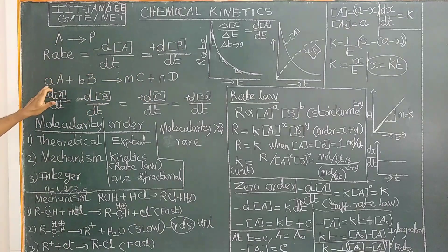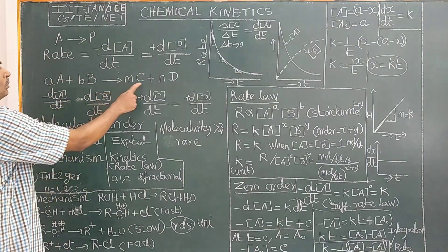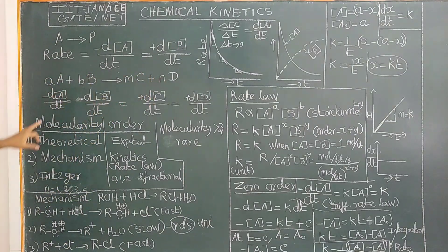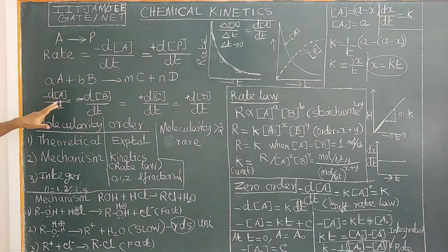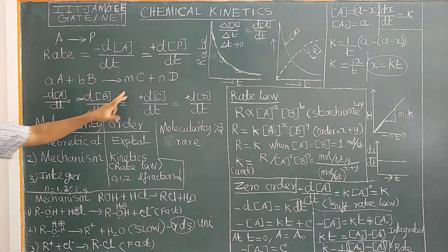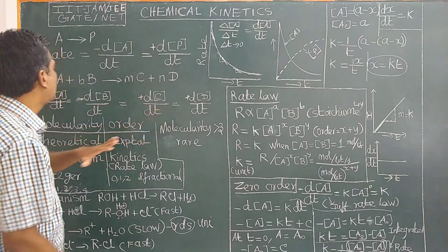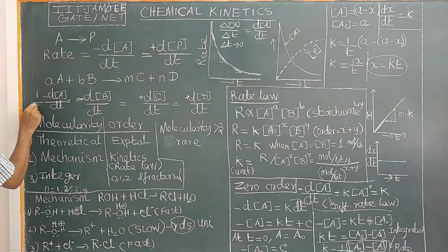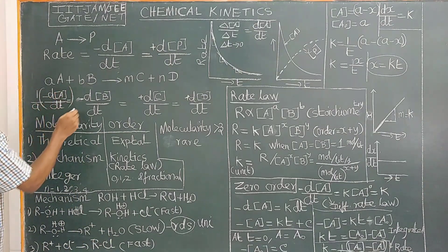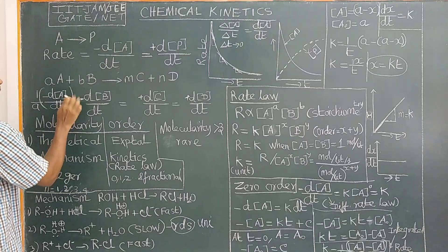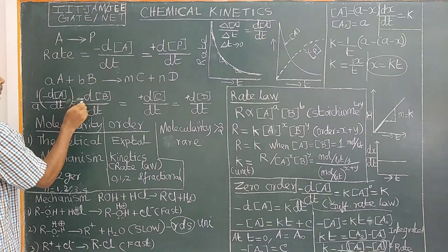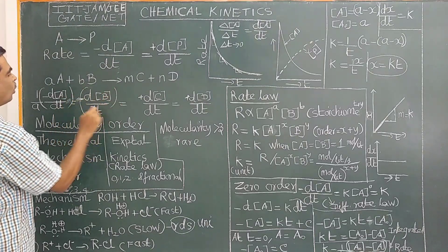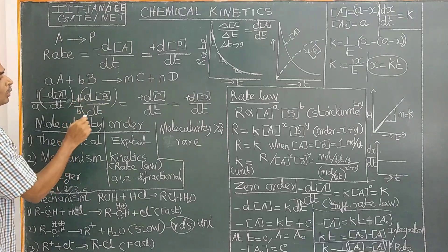Let us take a general case: aA + bB → mC + nD. In this case, the rates with respect to A and B are not equal. In order to make them equal, we divide by the stoichiometric coefficient — so the coefficient becomes 1/a for A and 1/b for B.